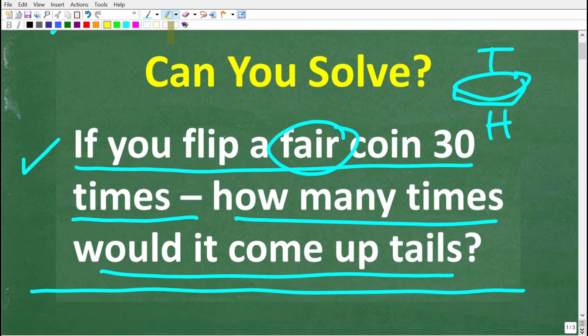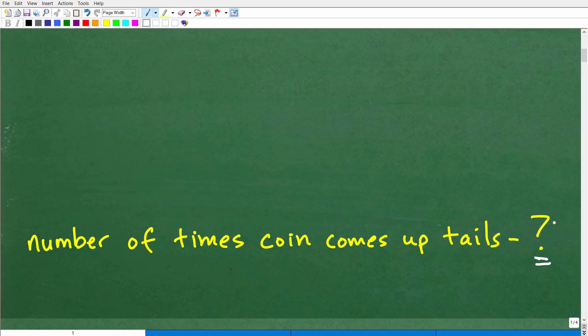Okay, so one more time, if you flip a fair coin 30 times, how many times would it come up tails? So let's take a look at the answer to this question. There is no answer. There is no precise answer. And just think about it.